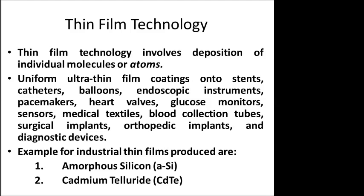Thin film technology is also used in various industries. Examples of industrially produced thin films include amorphous silica and cadmium telluride, which are used as thin film layers for nanomaterials.